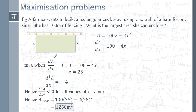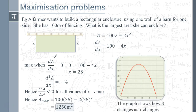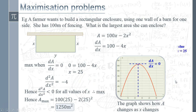Normally in the exam that would be enough, but let me just show you the graph to give a sense of what's happening. The area function is a negative quadratic: when x is very small the area is very small, it grows as x increases until we reach x = 25, where the rate of change of area with respect to x becomes zero — the rectangle stops getting bigger and starts getting smaller again. After that point we get a tall thin rectangle and the area falls back toward zero.